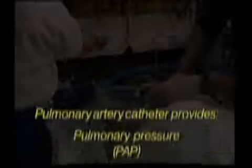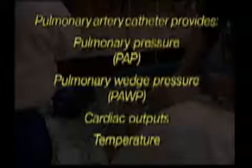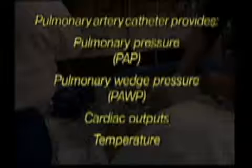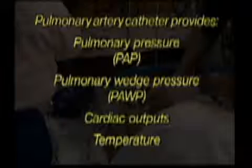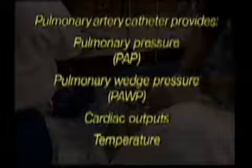The arterial line is connected for close monitoring of blood pressure. The pulmonary artery catheter will provide pulmonary artery pressure, or PAP, pulmonary artery wedge pressure, or PAWP, cardiac outputs, and patient temperature.